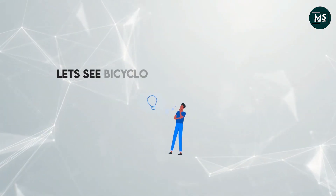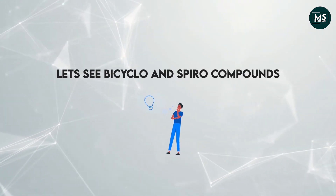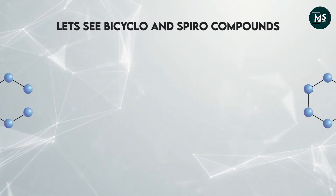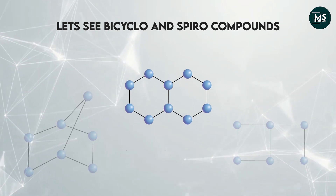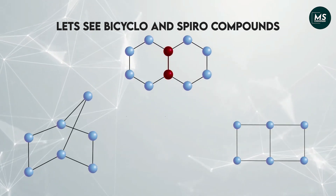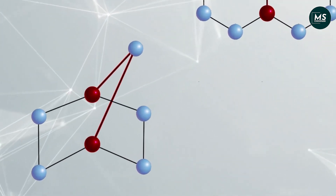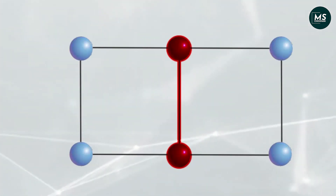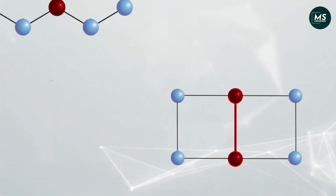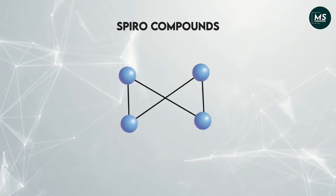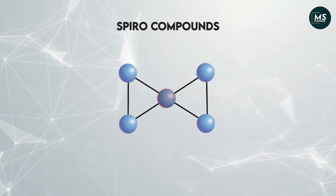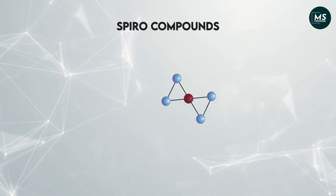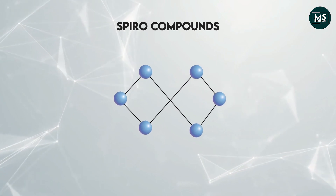Let's look at bicyclo and spiro compounds. If two carbon atoms are common between two rings, then the compound is bicyclo — here are some examples of bicyclo. If only one carbon atom is common between two rings, then the compound is spiro. These are examples of spiro compounds.